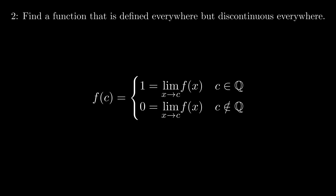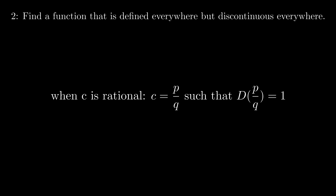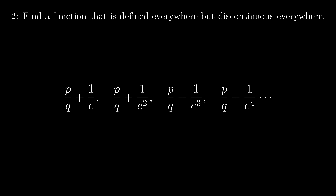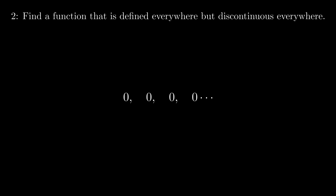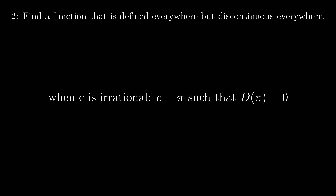Applying this to the Dirichlet function, the limiting process depends on whether c is rational or irrational. Let's focus on the case that c is rational first. So c is p over q and d(c) is one. I can construct a series clearly approaching p/q, which is c, but always irrational because e is irrational. Therefore this limiting process will always yield zero, so f(x) is not continuous at any rational point c.